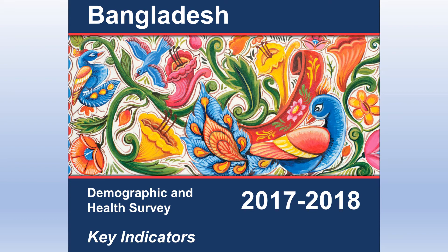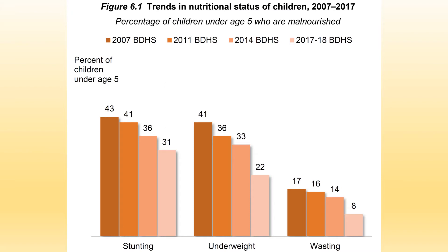Demographic and health surveys are also good examples of cross-sectional surveys, where they measure different health indicators among children, among women, and among different groups of people. In a recent survey in Bangladesh, they have nicely shown results from the last four Bangladesh Demographic and Health Surveys on the nutritional status of under-five children — they measured stunting, underweight, and wasting.